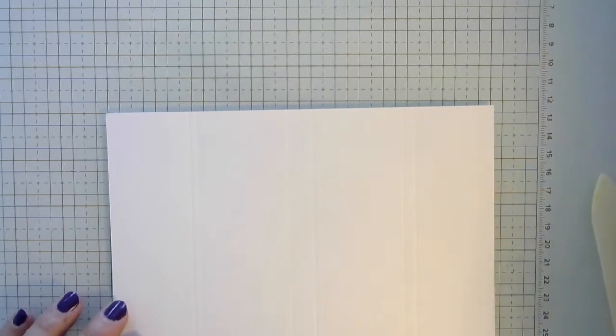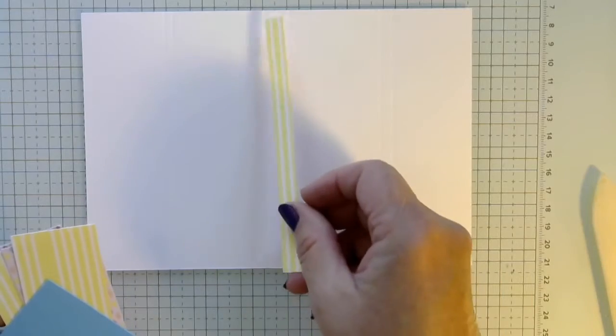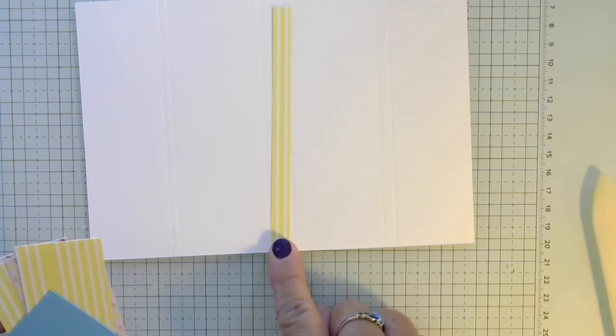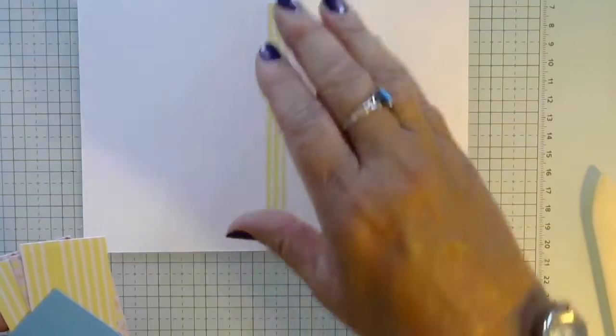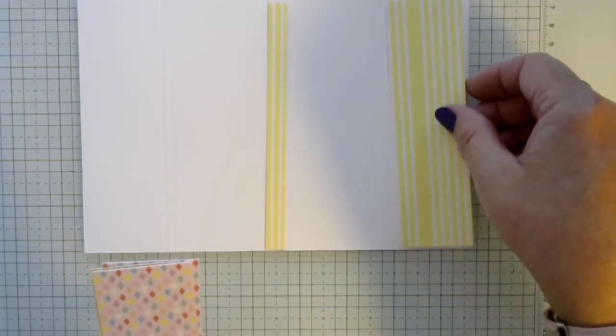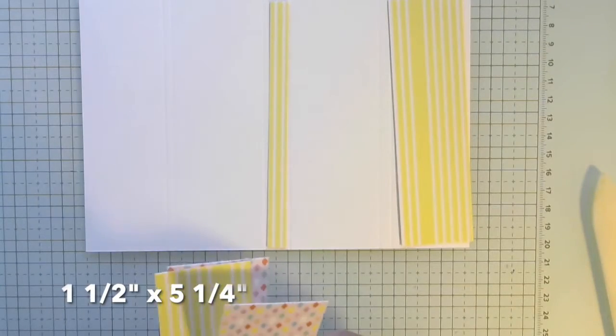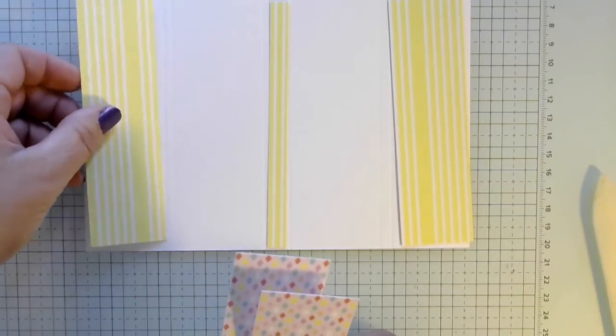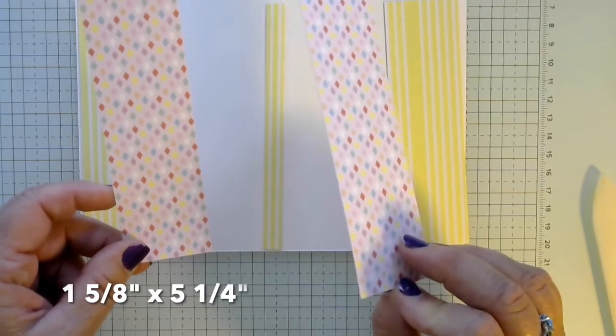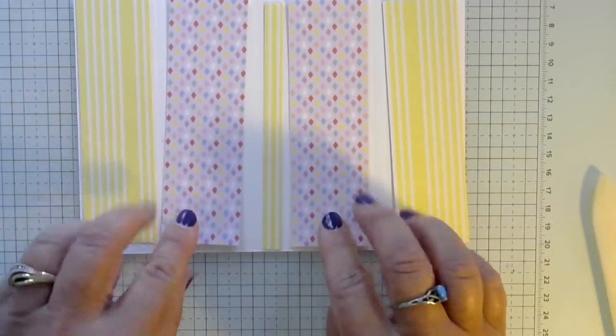Now I've already cut the DSP that we're going to be using. I've got a little narrow strip. That one is 3 1/8 by 5 1/4, and these are all 5 1/4 tall. Then I have two pieces that are 1 1/2, and then two pieces that are 1 1/5. These are just a hair bigger.